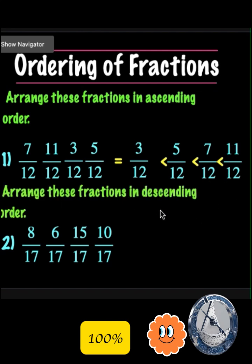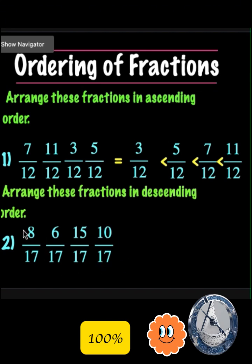Arrange this fraction in descending order. In descending order, we start with the biggest fraction, which is 15 over 17, followed by 10 over 17, then 8 over 17, and the least fraction is 6 over 17.